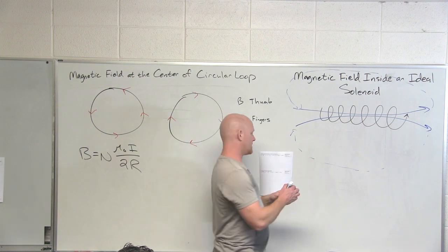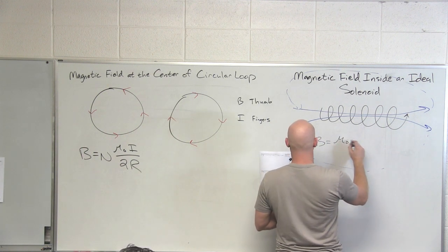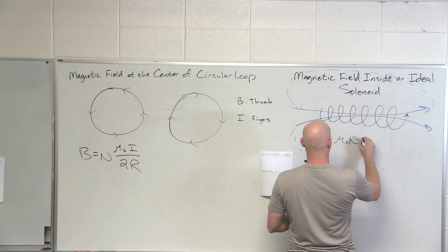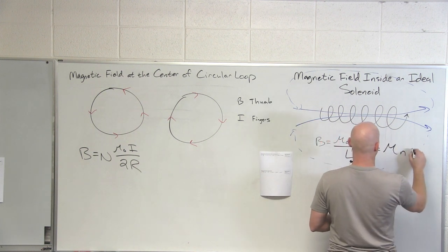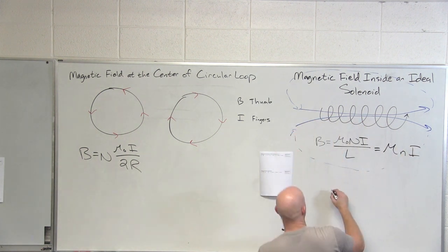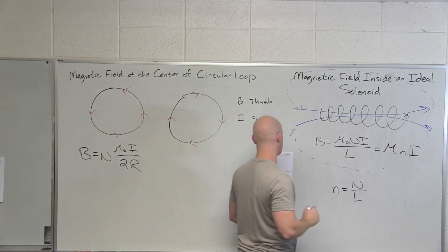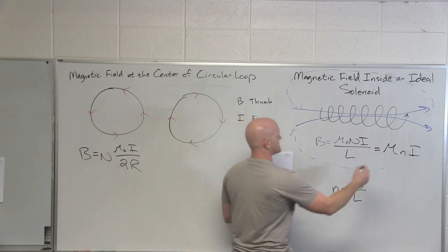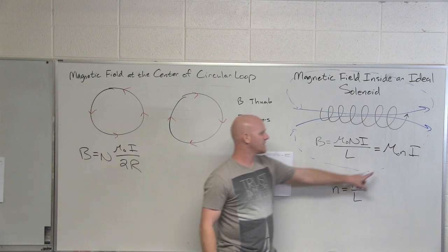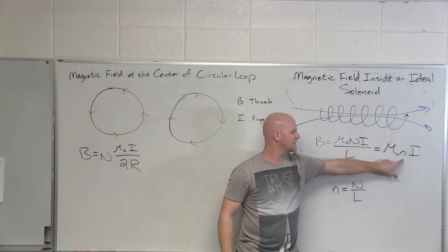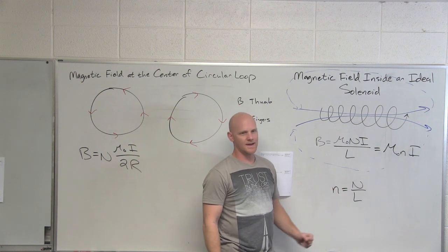Your equation for this is on your handout as well. You're normally going to see it presented this last way right here - mu knot and then n, which is the number of turns per unit length.